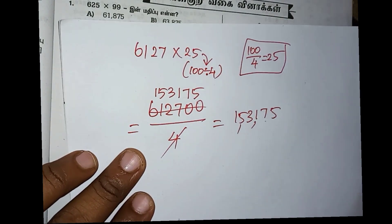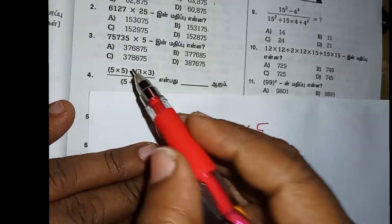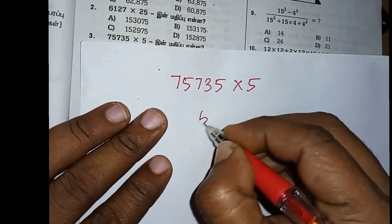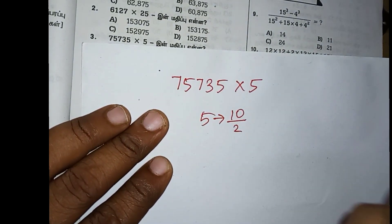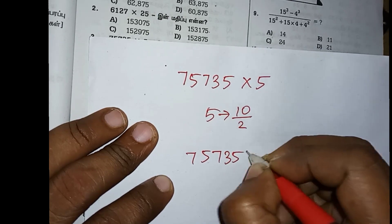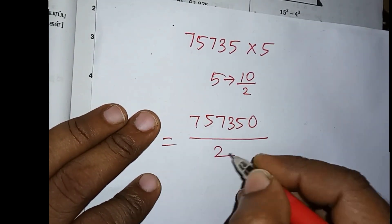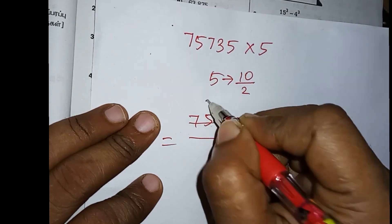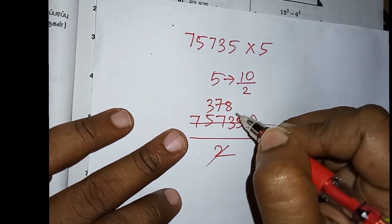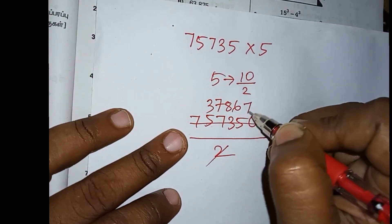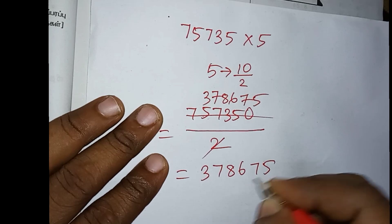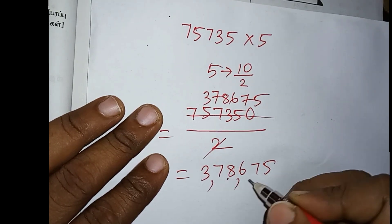Now 75735 times 5. We multiply and add, so 5 times 5 is 25, carry 2. 5 times 3 is 15 plus 2 is 17, carry 1. Continue multiplying: 5 times 7 is 35 plus 1 is 36, carry 3. Working through gives us 378675 as the answer.